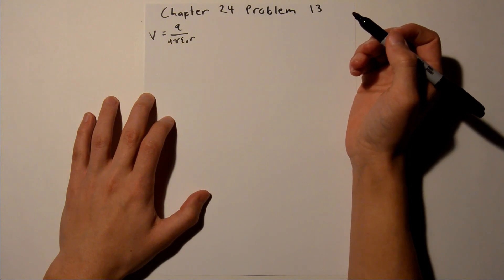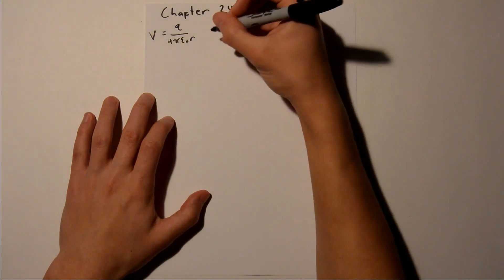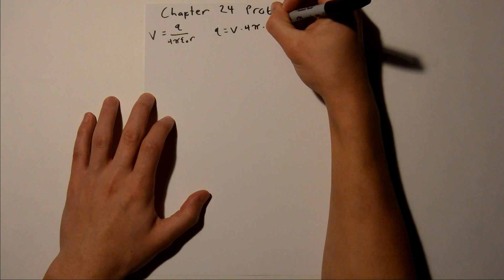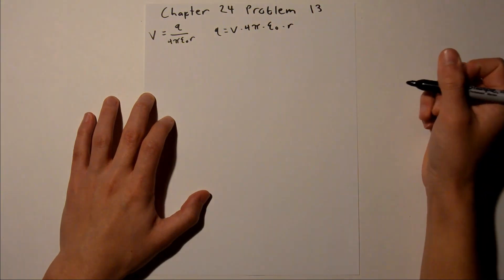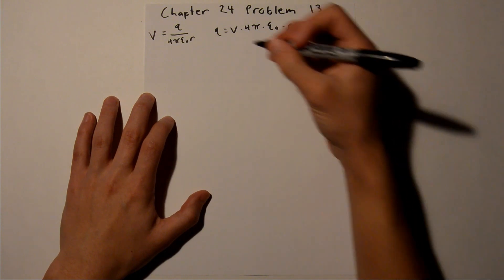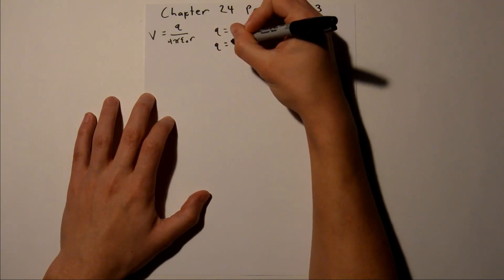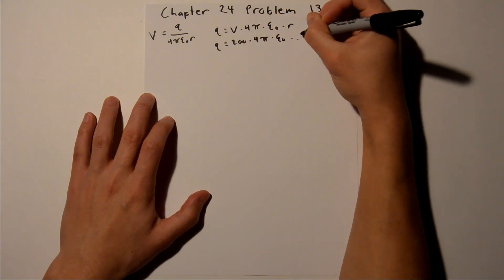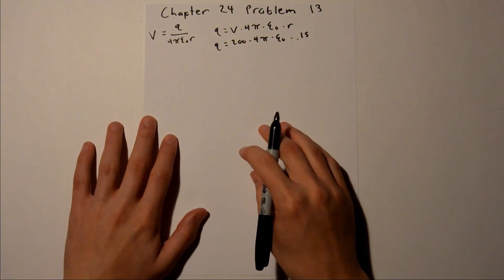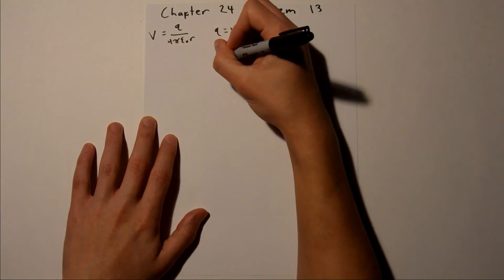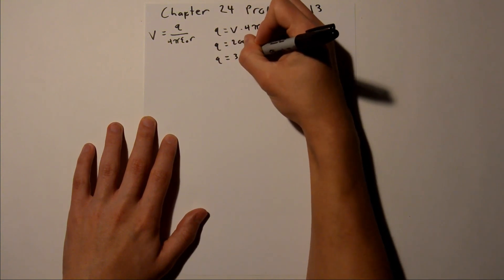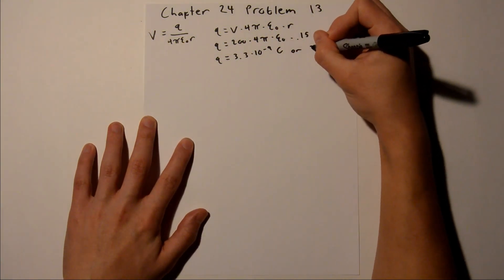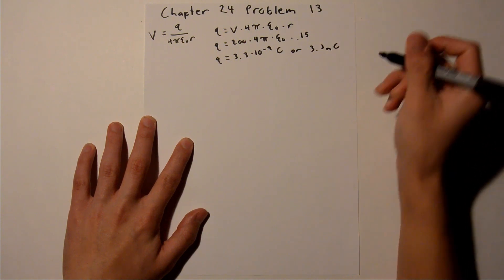So since we need to solve for q, we need to multiply both sides by this denominator. So that means q will equal potential times 4 pi times epsilon sub 0 times r. And we have all of those values, so we can say q equals 200 times 4 pi times epsilon sub 0 times 0.15. And when you plug that into your calculator, you should get a charge of 3.3 times 10 to the negative 9th coulombs, or 3.3 nanocoulombs.